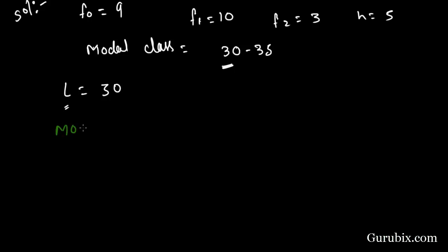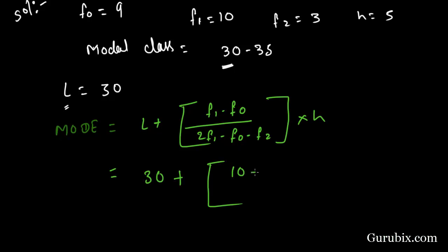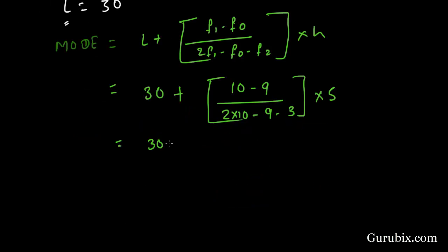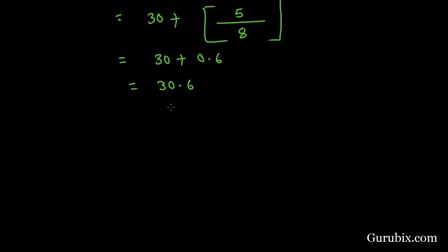We know that mode is equal to L plus (F1 minus F0) divided by (2F1 minus F0 minus F2), multiplied by H. This equals 30 plus (10 minus 9) divided by (2 times 10 minus 9 minus 3), into 5, which equals 30 plus 5 upon 8, equals 30 plus 0.6, equals 30.6. Hence, mode is 30.6.